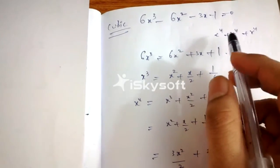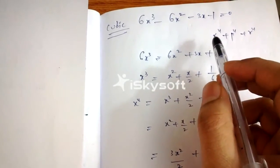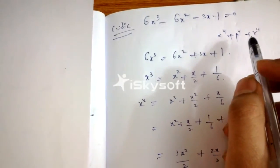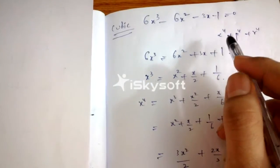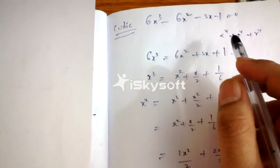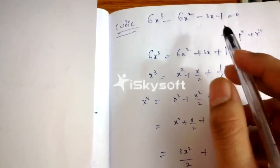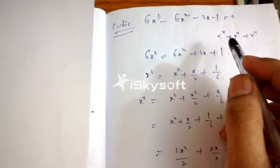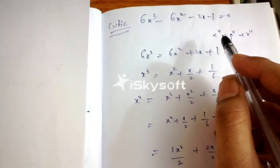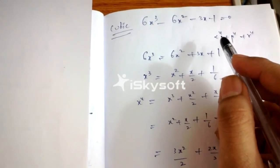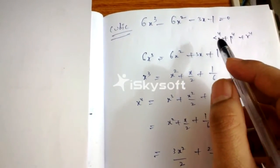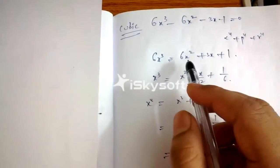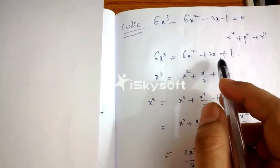These types of problems can be done using a clever trick. Alpha⁴ plus beta⁴ plus gamma⁴ can be written as (alpha² + beta² + gamma²)² — that way we can do it, but that becomes somewhat lengthy. So I'll give you an interesting method. We can write 6x³ as 6x² plus 3x plus 1.